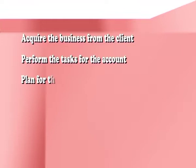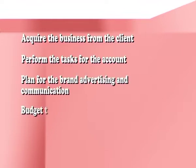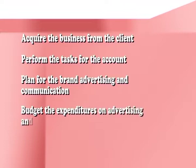Now, this budget may not suit the client. We would adjust it with the amount that is affordable, or see the sales and determine the budget and see what can be achieved within it. So finally, a combination of these methods would be used. This way the budget gets decided and all methods have their application and suitability. Today, what we have gathered from this lesson is: the way the agency functions with the client to acquire the business, perform the task for the account, plan for brand advertising and communication, and budget the expenditures on advertising and achieving objectives.